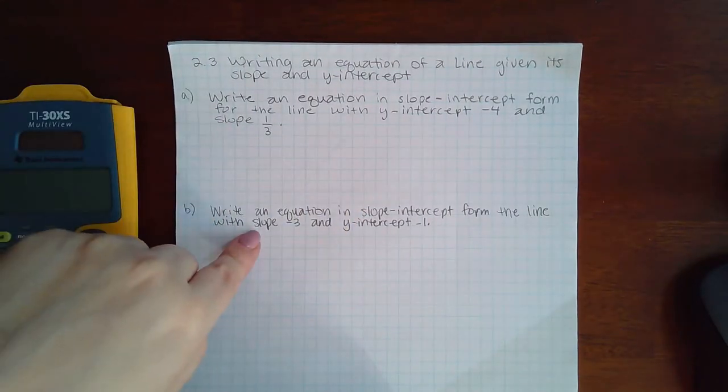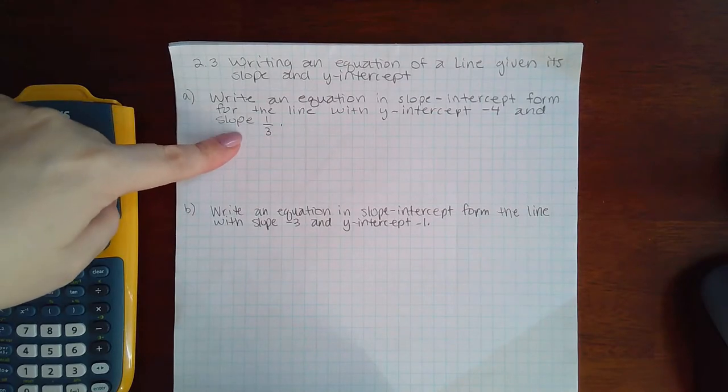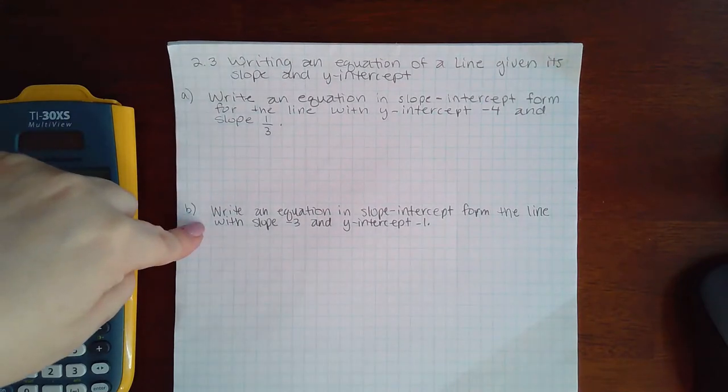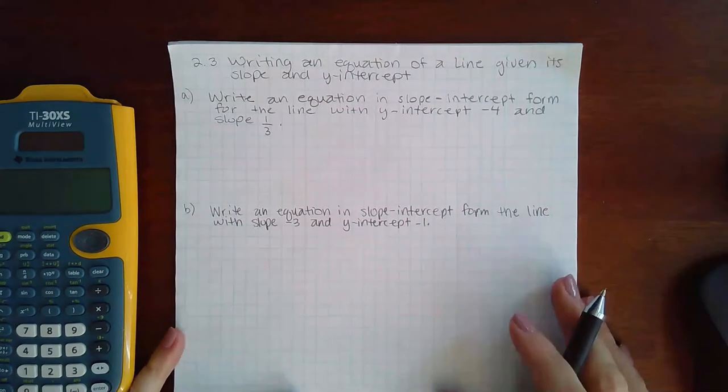Although it doesn't matter what order they give them to you, it's the information that is important. Another difference between the two problems is that the first example has a fraction slope and the second example has an integer slope. We'll see how it all works out.